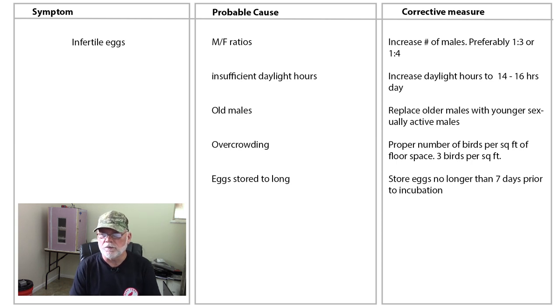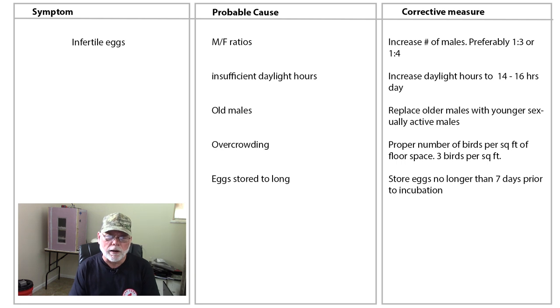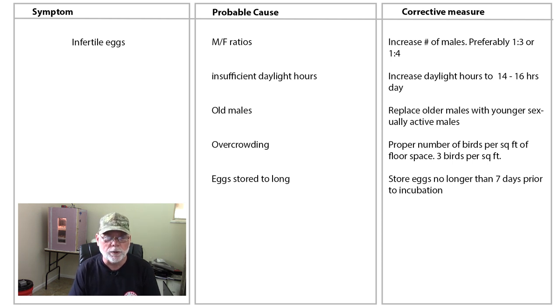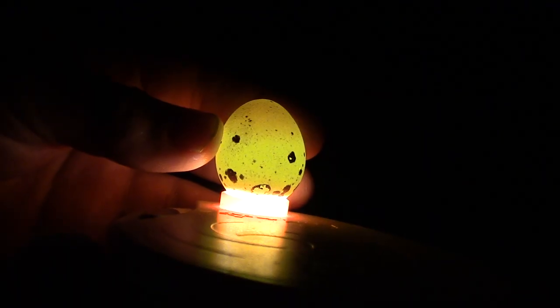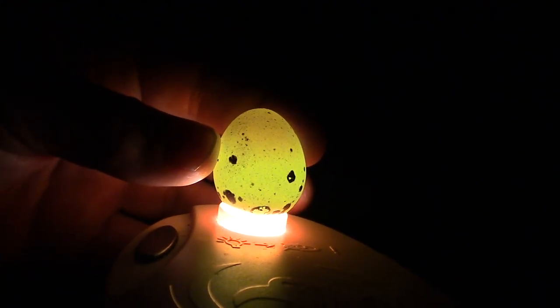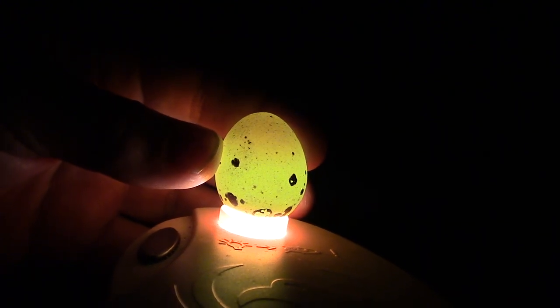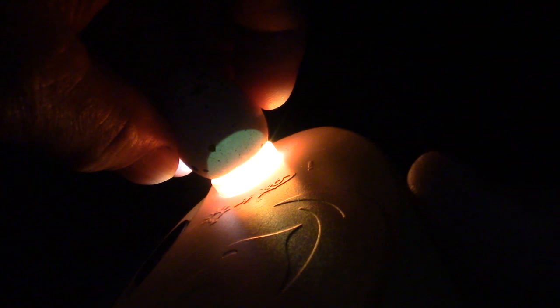Okay, so here we are at the computer. On the right hand side you can see a sheet that lists the symptoms, the probable causes, and any corrective measures that can be taken to rectify the problem. Caternix quail eggs can be candled — it can be a little bit difficult due to the coloration of the eggs. In the first clip the egg is completely illuminated showing absolutely no development, so this is an infertile egg. In the second clip only the air cell on the large end is illuminated and the rest is dark, showing some development. And in the last one you can actually see the veins forming and growing around the inside of the egg — this egg is definitely viable and developing.